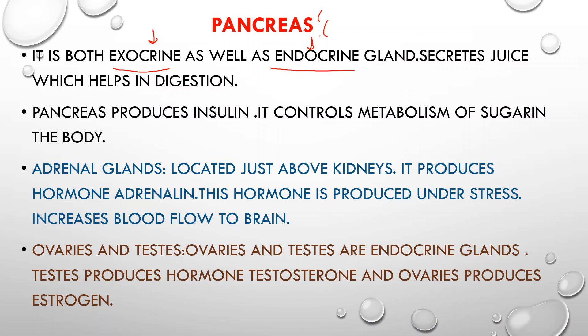Insulin controls the metabolism of glucose in the body. When the pancreas does not produce enough insulin, sugar or glucose in the blood increases, and this condition is called diabetes mellitus. Whenever there is extra glucose in the body, insulin converts that extra glucose into glycogen, which is then stored in the liver.